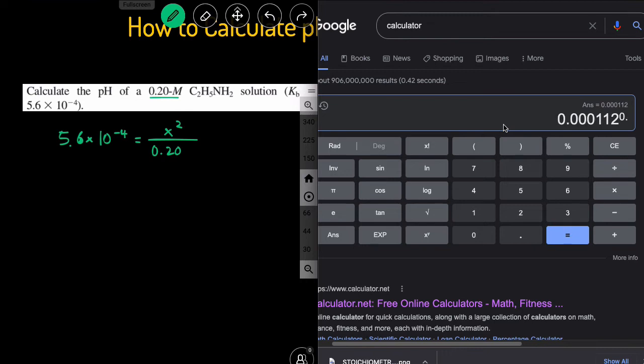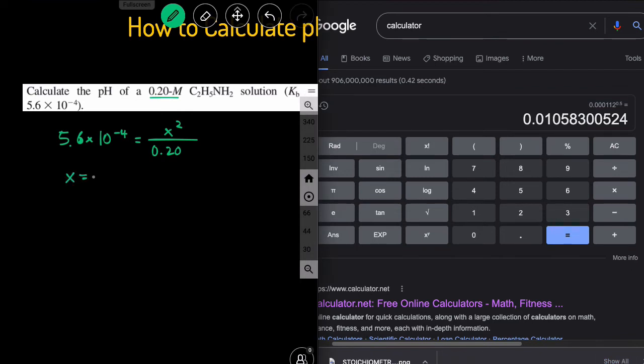Taking the square root of both sides is the same thing as raising the answer that we got to the 0.5 power. And that gives us our x value, that x is equal to 0.0105, which is just going to equal the OH concentration.